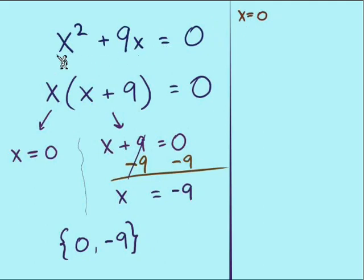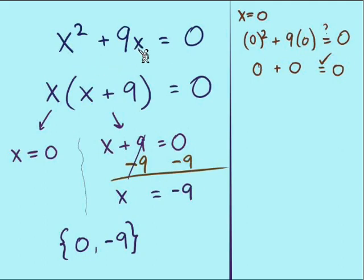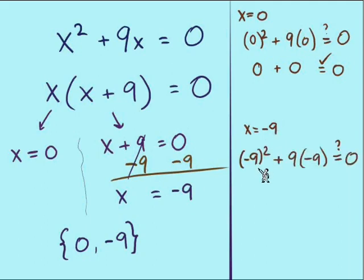Let's check our solutions. Checking x equals 0 back in the original equation x squared plus 9x equals 0: plugging in 0 for each x gives us 0 squared plus 9 times 0, which is 0 plus 0, and that does equal 0. That's a check. It might not seem like much with all these zeros, but all we want is a number that makes the equation true — and putting 0 in place of x does make it true.